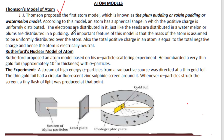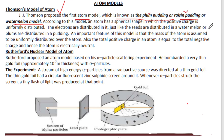J.J. Thomson proposed the first atom model, which is known as the Plum Pudding Model, or Raisin Pudding Model, or Watermelon Model. Now let's look at the Plum Pudding Model — how to understand the Plum Pudding, Raisin Pudding, and Watermelon Model.